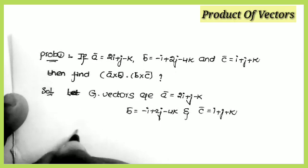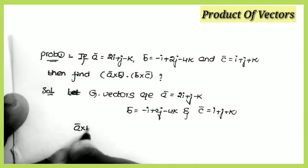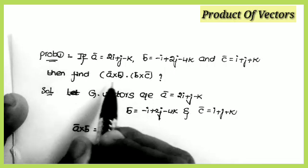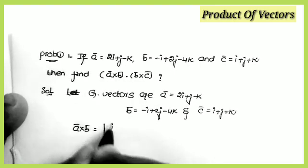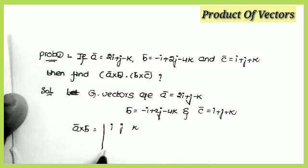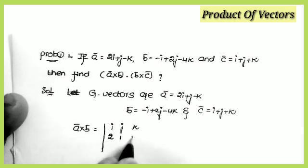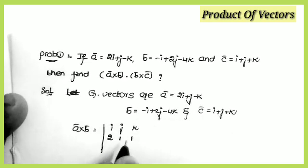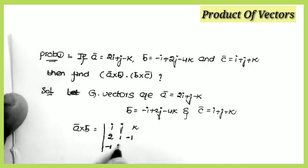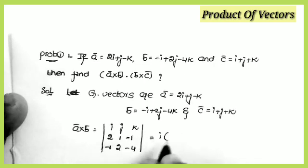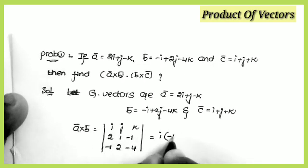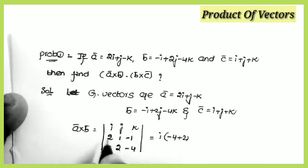First I am finding a×b, then b×c, and then doing the dot product. For a×b, we set up the determinant with i, j, k in the first row. The components of a are (2, 1, −1) and the components of b are (−1, 2, −4).